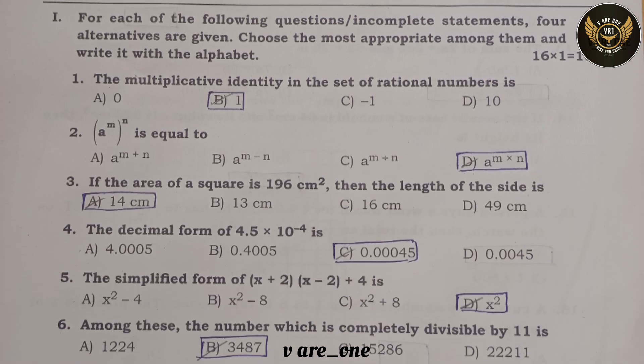First question: the multiplicative identity in the set of rational numbers is option B: 1.